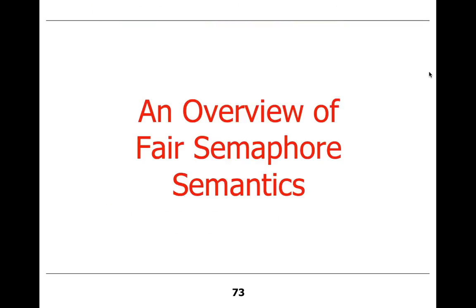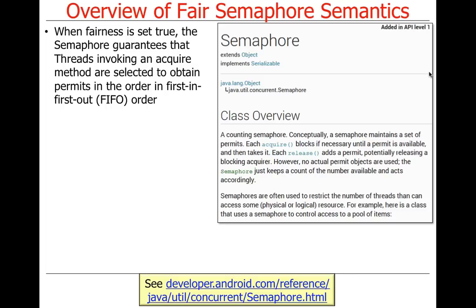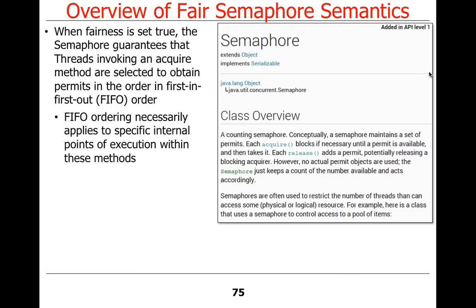Now let's talk about fair semaphore semantics. Fairness lets you do things in FIFO order. The subtle point is that when you look at the implementation, there are certain places where you actually acquire a lock. It doesn't matter if the acquire method in one thread is called first — it's not acquire being called that matters, it's the synchronization point inside of acquire that matters. Thread one could call acquire first, but because of scheduling order, thread two might actually acquire the lock first. How you would ever test this is anybody's guess, but what matters is when you synchronize, not when the method is called.